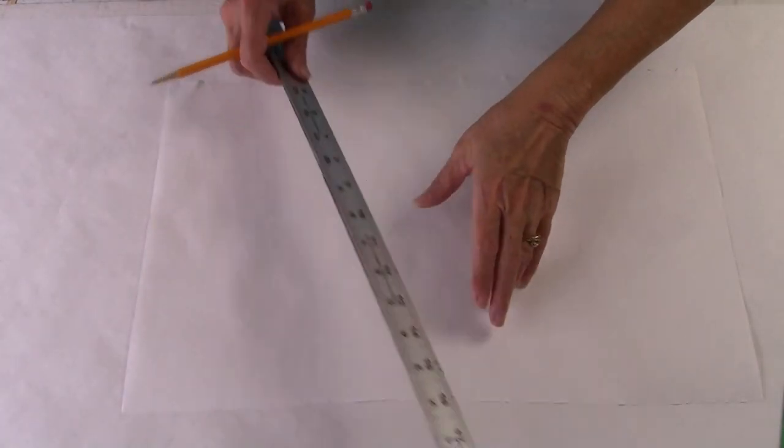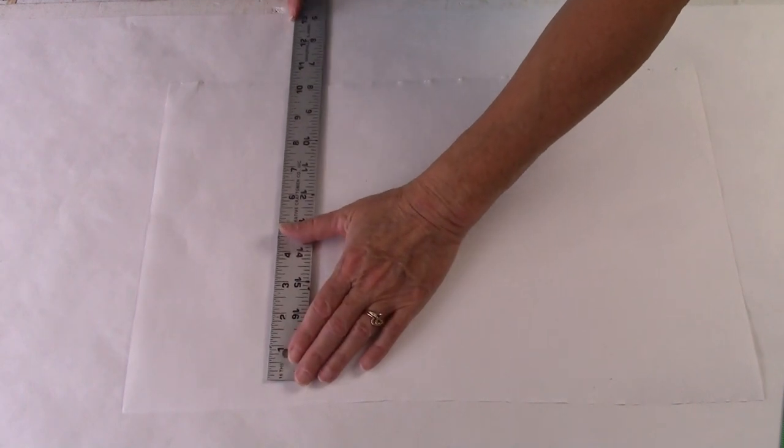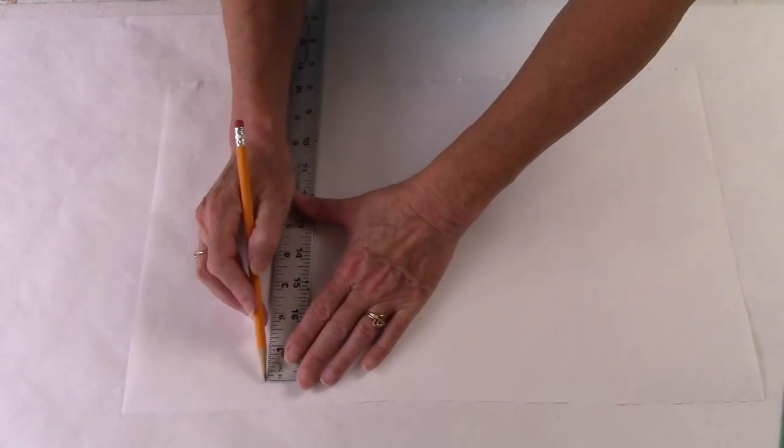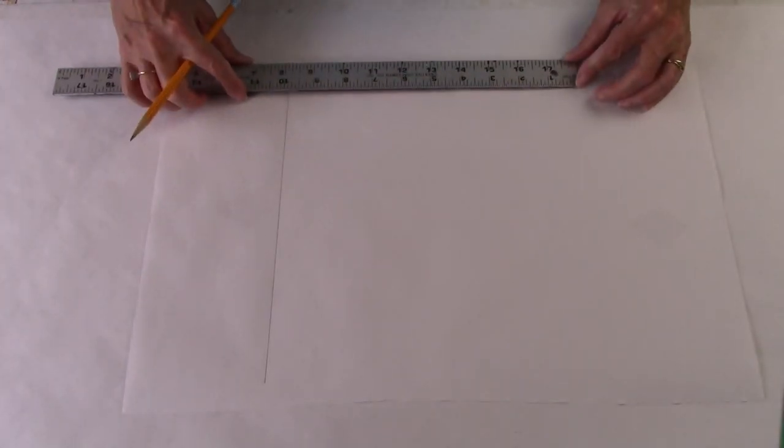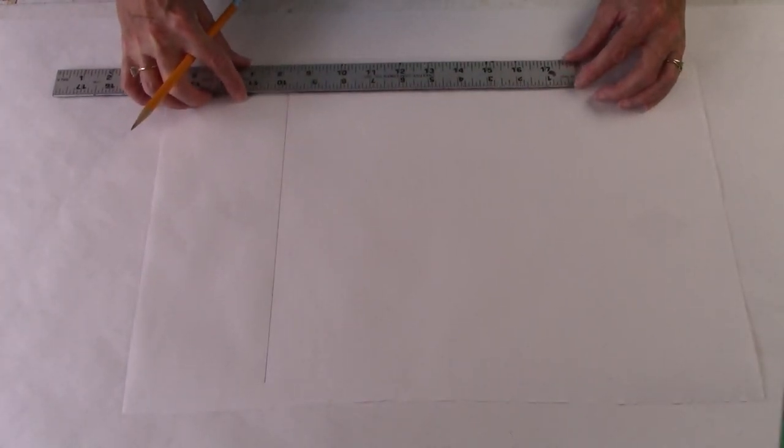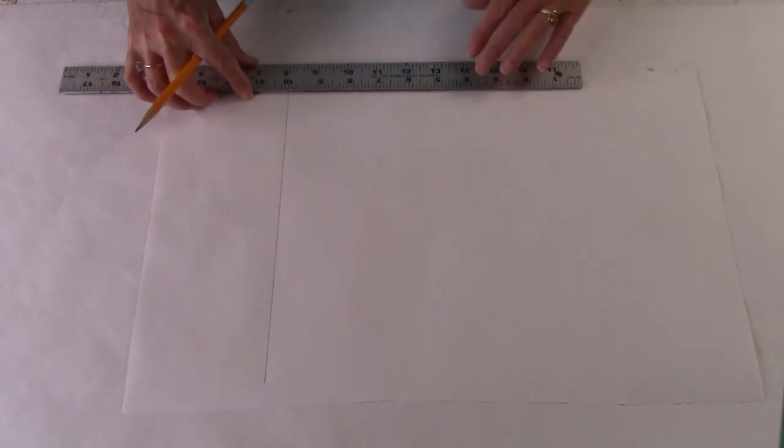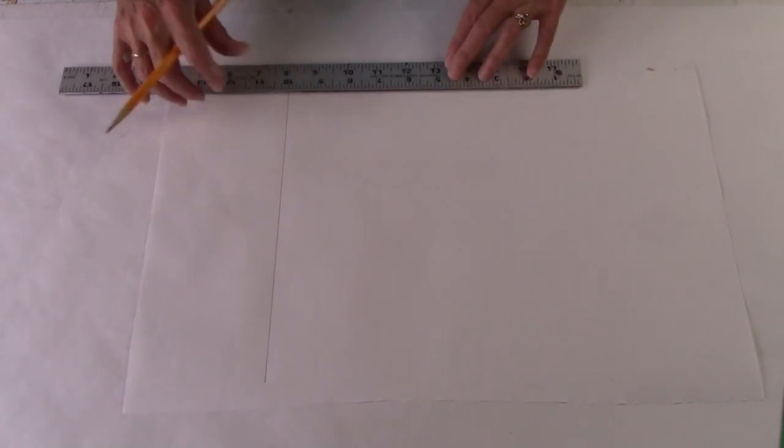I begin with a plain piece of paper and dimensions for my project. I come up with the dimensions based on the mold that I want to use to slump this piece of art. I measure my slumping mold and then draw the design accordingly. This piece of art is going to be a 10 inch by 10 inch square.